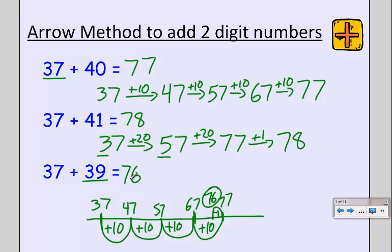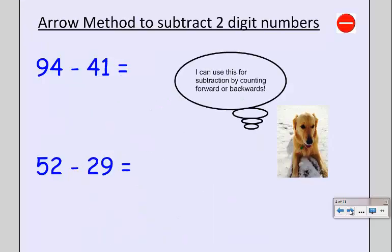Let's see how this works with subtraction. We can actually use subtraction two different ways. You can either count backwards and take away, or you can still count forwards. So let's take a look and see what this looks like with the arrow method.